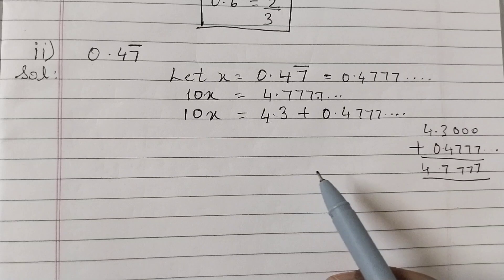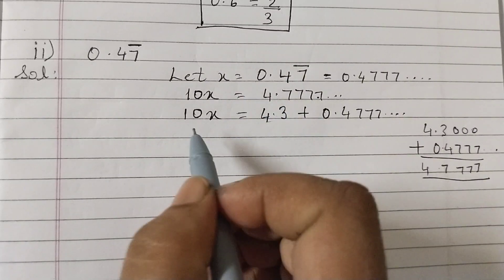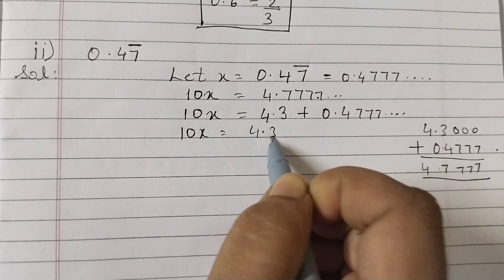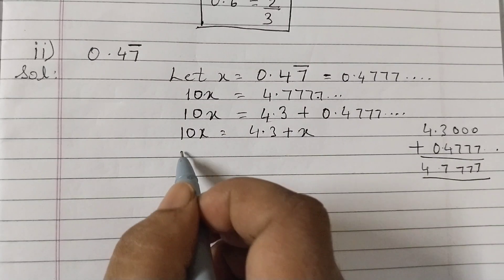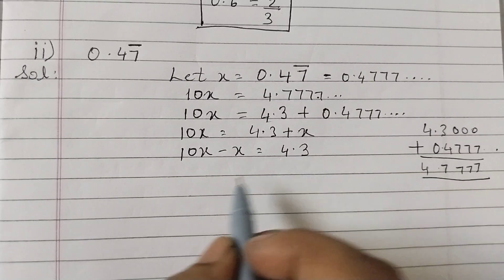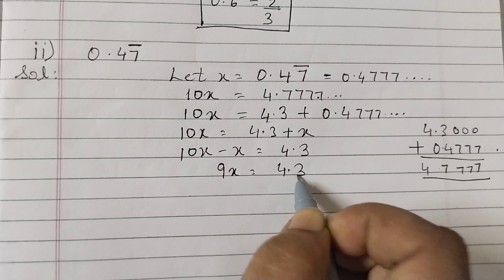What you can do is this number minus this one. If you do that, you will easily get this number. This will come with practice. So now this number is exactly the same as x. So 10x is equal to 4.3 plus x. Get x on the other side. 10x minus x is equal to 4.3. This is 9x equals 4.3.